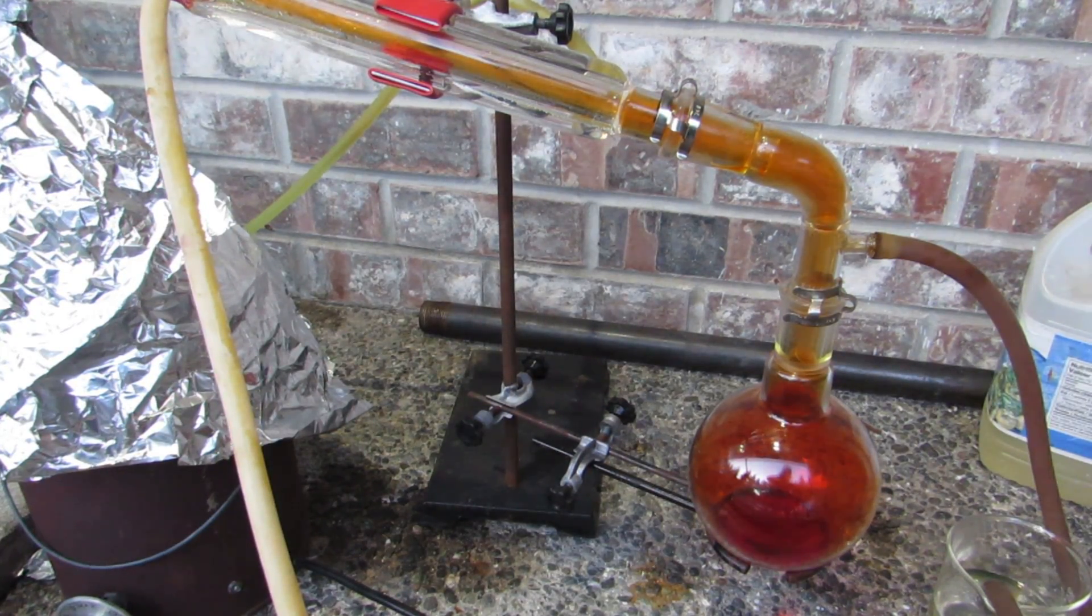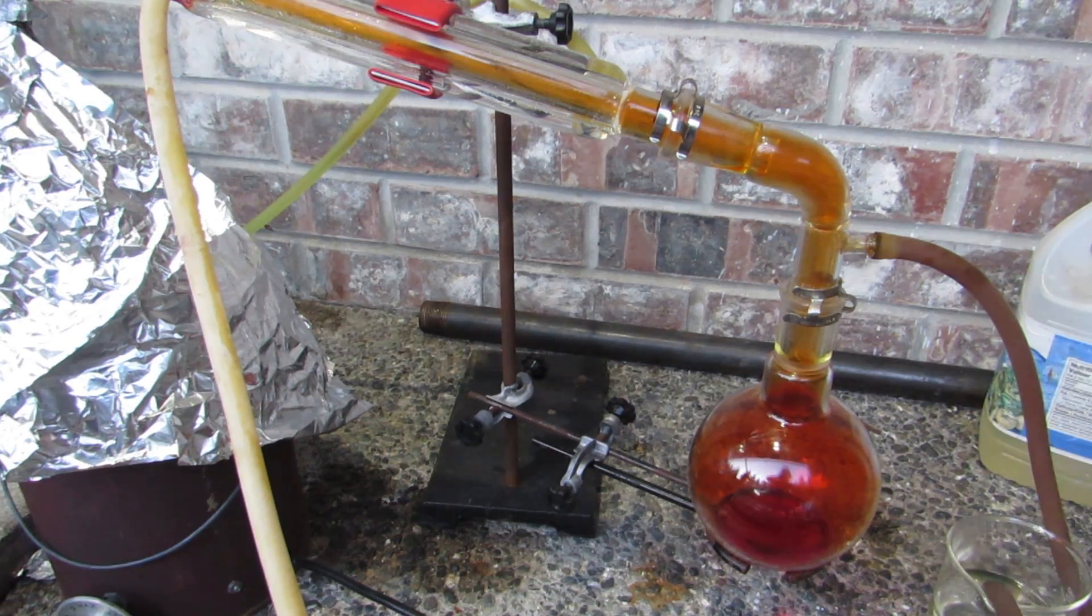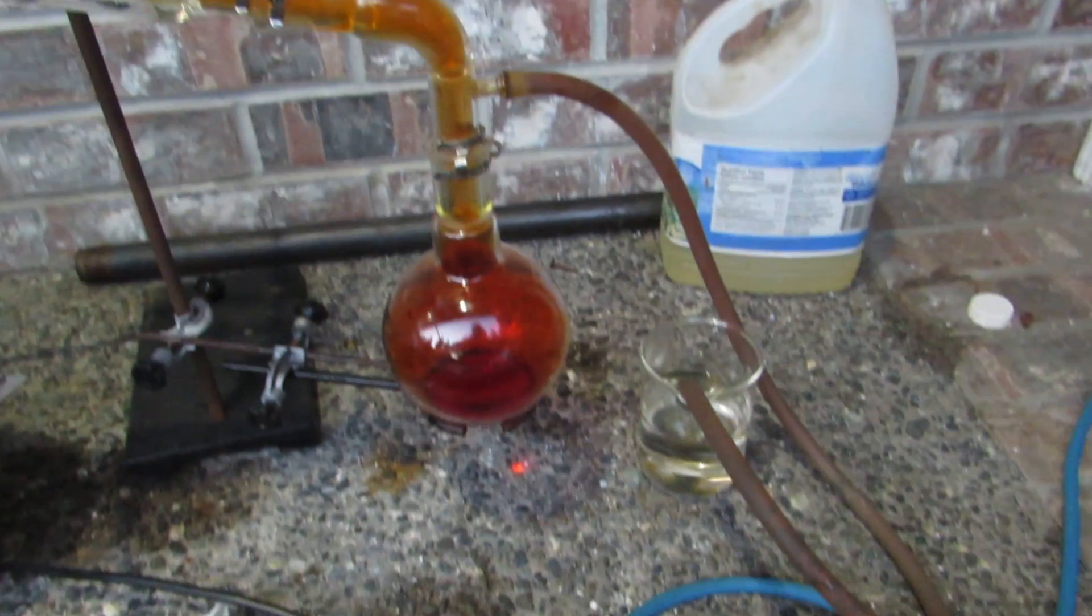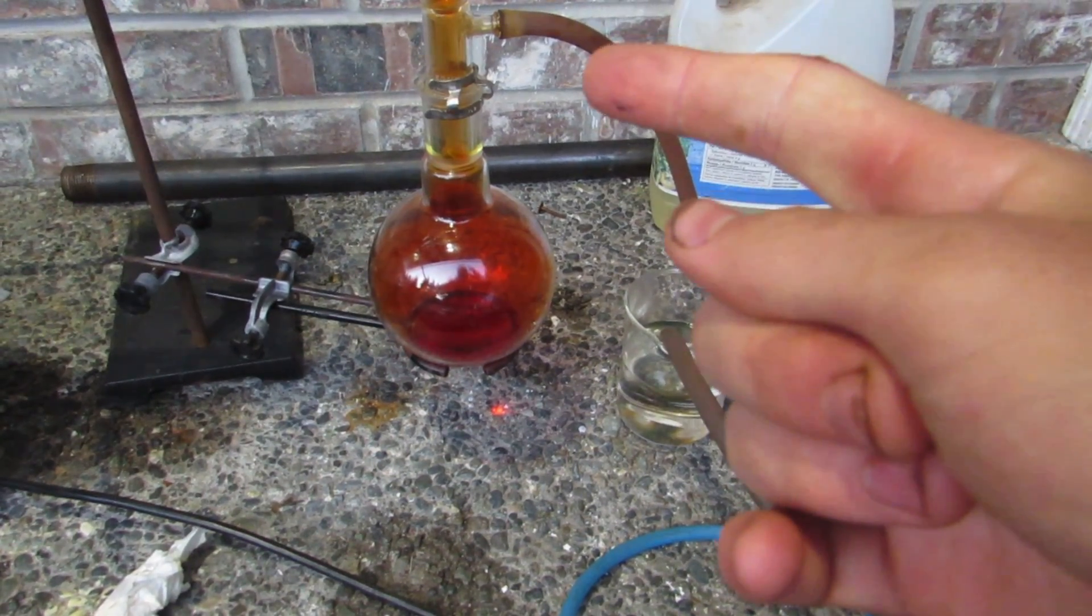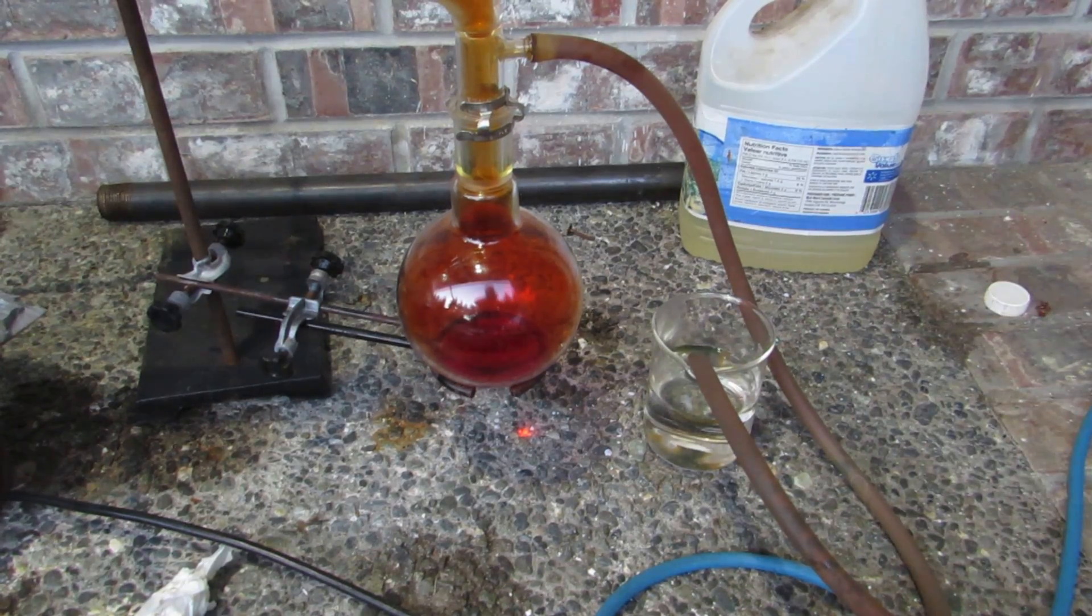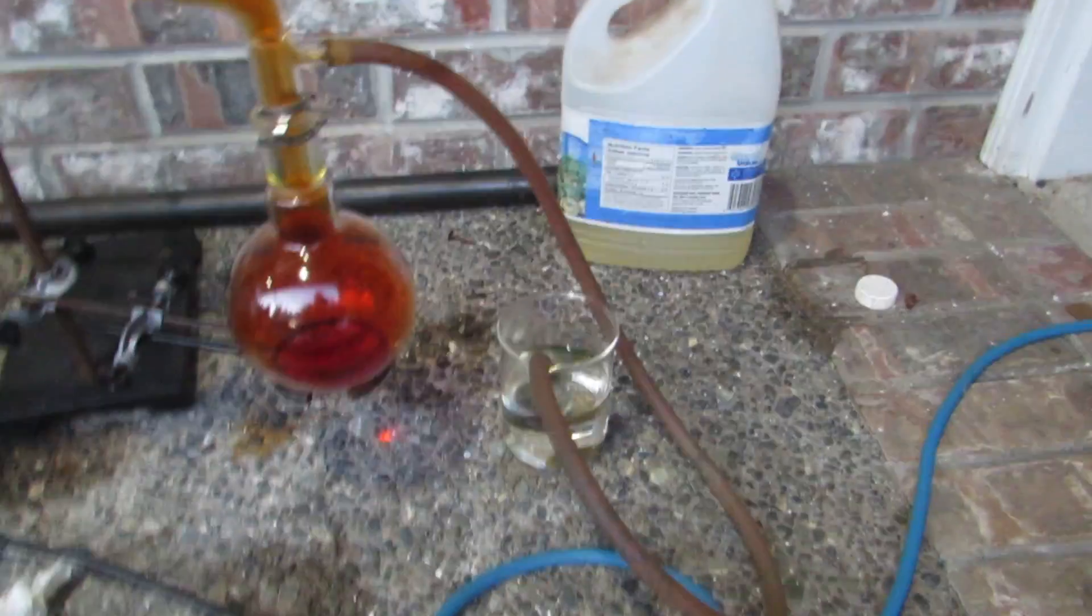As more liquid distilled over, some elemental bromine began forming and filled the apparatus. This is likely from the degradation of the hydrogen bromide. There was also hydrogen bromide being generated directly as a gas and being passed out of the apparatus, so a tube leading into a beaker of water was attached to collect this hydrogen bromide as well.